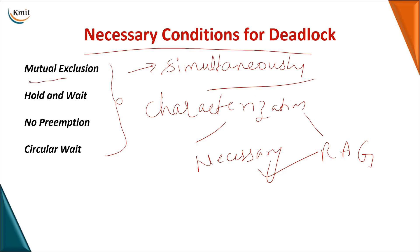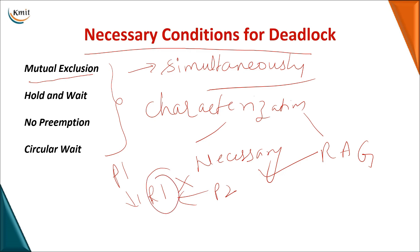The first necessary condition is mutual exclusion. As seen in process synchronization, if one process is using a resource, another process is not allowed to use that same resource at the same time. When mutual exclusion is present, it contributes to a deadlock condition.